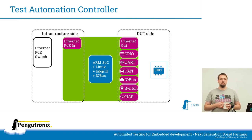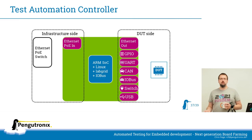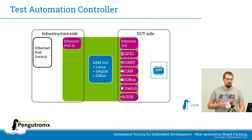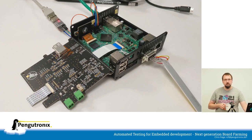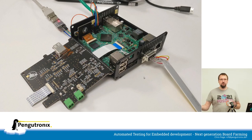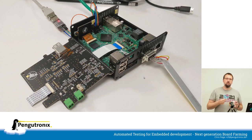We connect these test automation controllers via a single Ethernet port using PoE for power delivery, connecting to the existing PoE switches in our labs. An Ethernet switch is integrated into the test automation controller so we can share the same physical cable to also supply the device under test with Ethernet. We add a few GPIOs, a logic-level UART interface with an adapter concept for RS-232, a CAN bus for CAN and CAN-FD connectivity, a second CAN bus for the IO bus, an integrated power switch for switching the lower voltage the devices actually need, and USB host ports plus a device port.